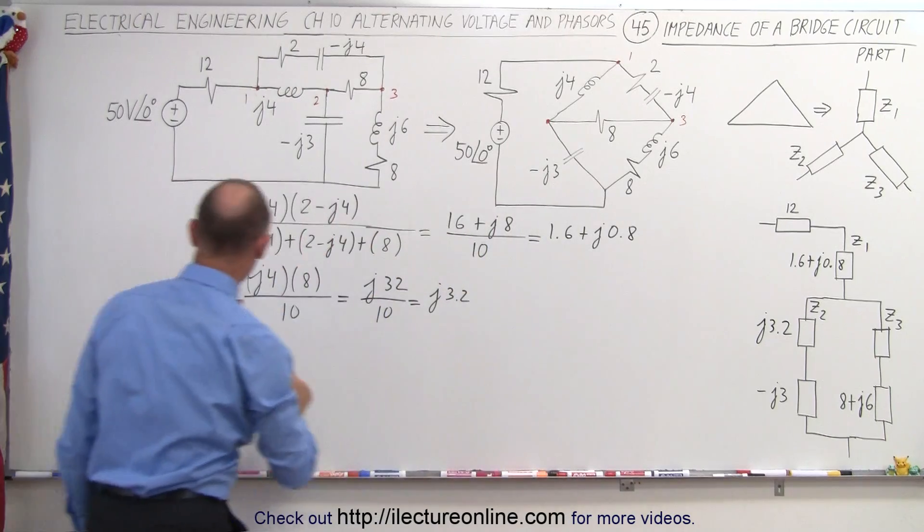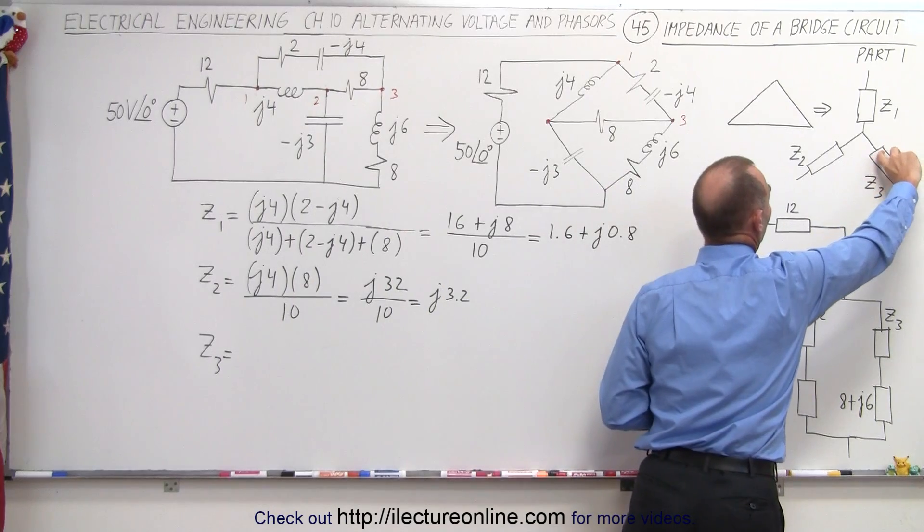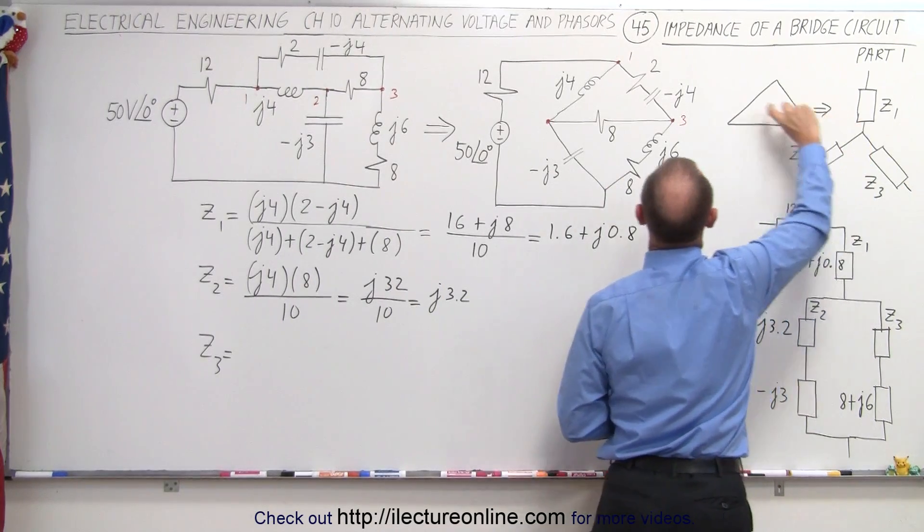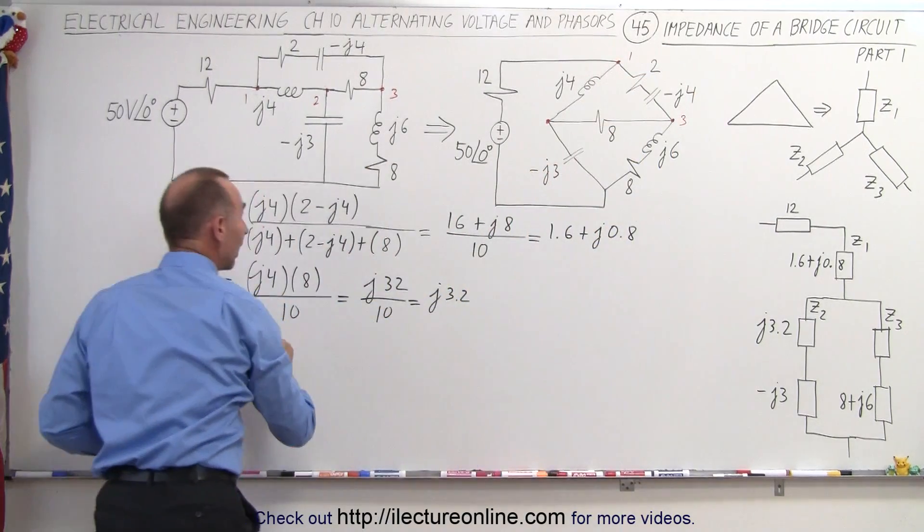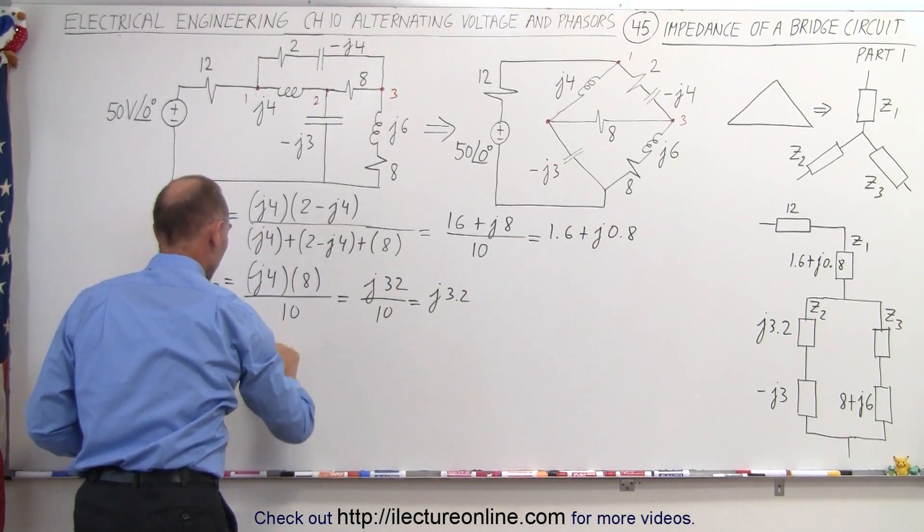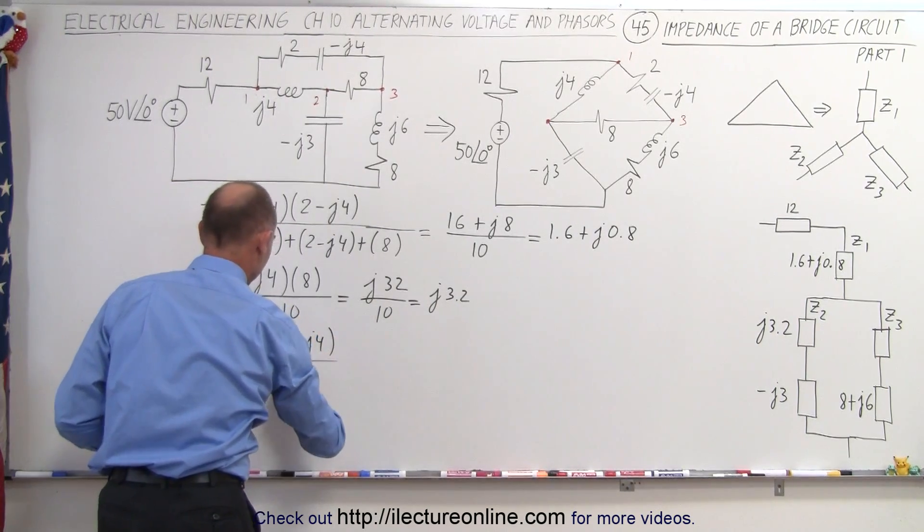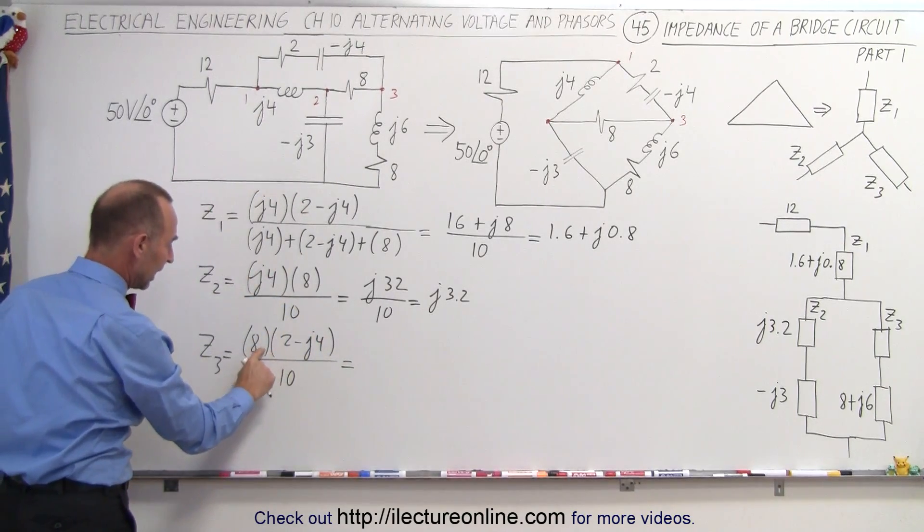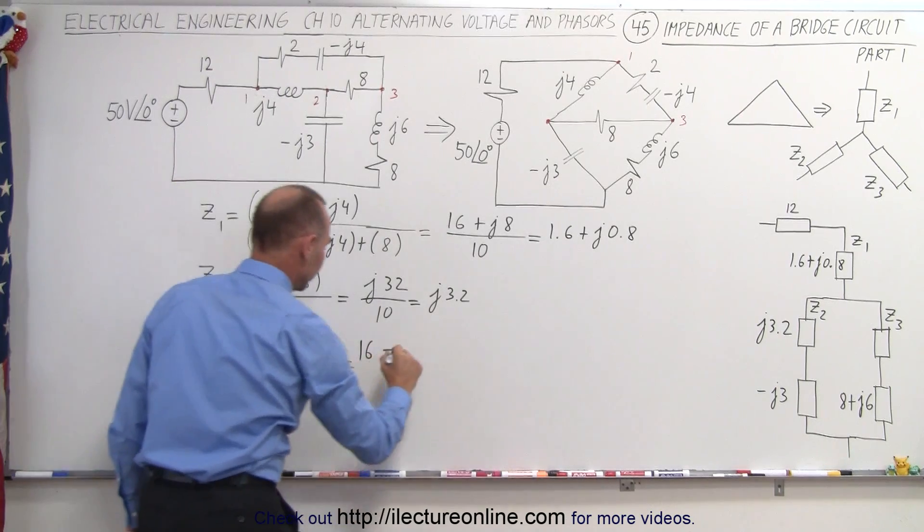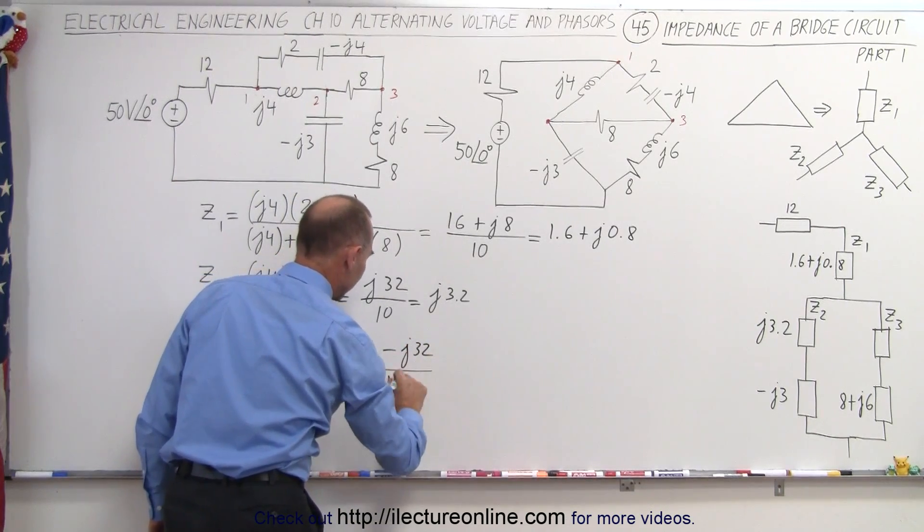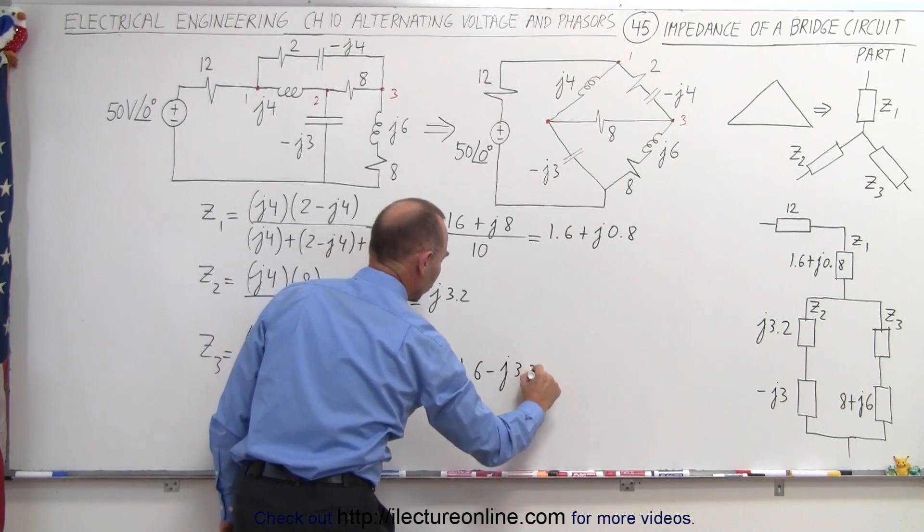And finally we need to find Z3. Now Z3, that's this part of the Y branch right there. So I'm going to go over here. That's the product of these two divided by the sum of all three. So we have 8 multiplied times 2 minus J4, all divided by 10. So we multiply this together. We get 8 times 2 which is 16, minus 8 times 4 is 32. So that's J32 divided by 10, which is 1.6 minus J3.2.